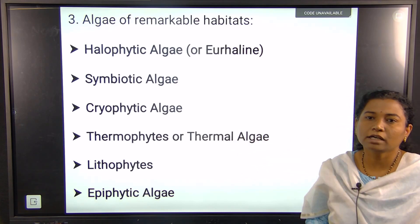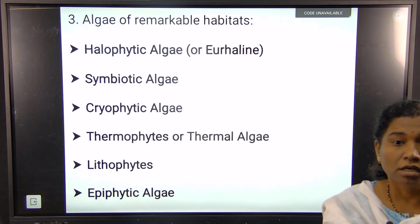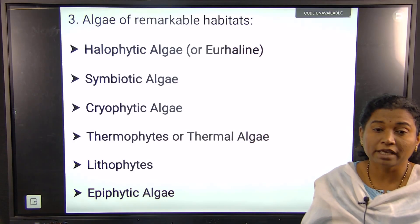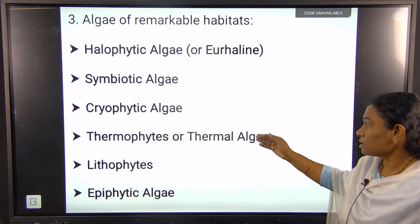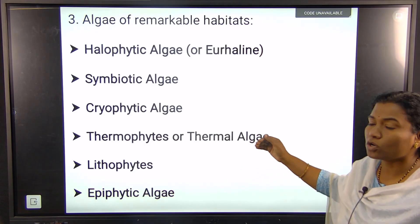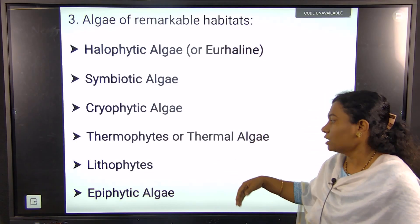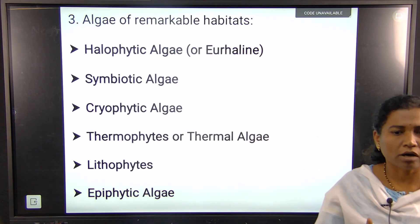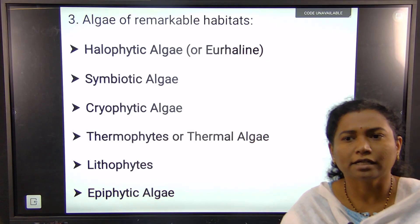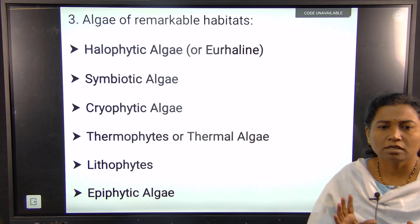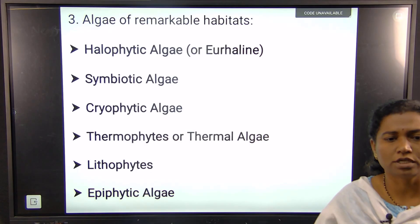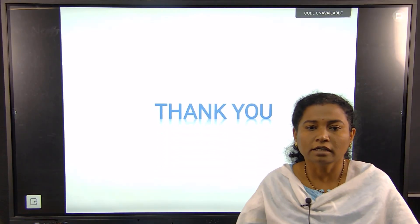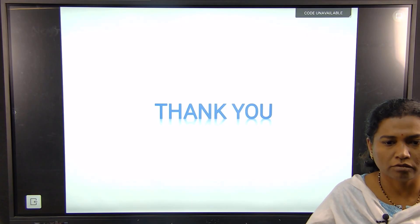Thermophytes, or thermal algae, grow in hot spring waters where the temperature may range up to 50 to 70 degrees centigrade; Oscillatoria is specifically found in this environment. Epiphytic algae are those which grow on other algae, tree trunks, or animals — they may be parasitic, saprophytic, or simply associated with another substrate. That's it for today; we will study the next part in the next video. Thank you.